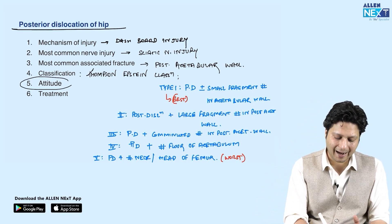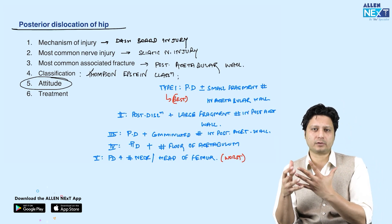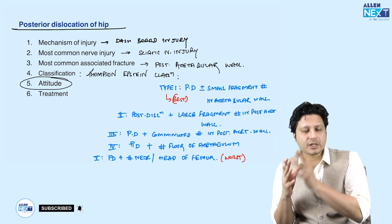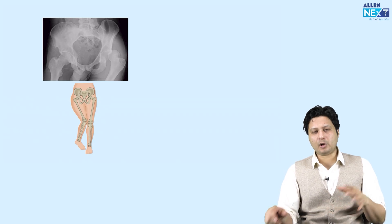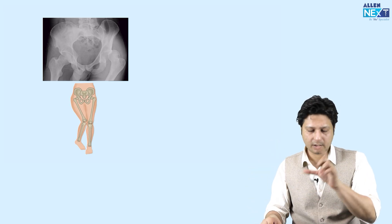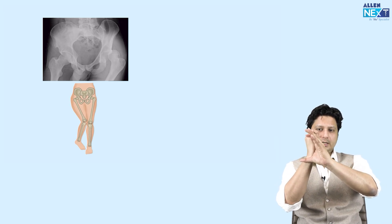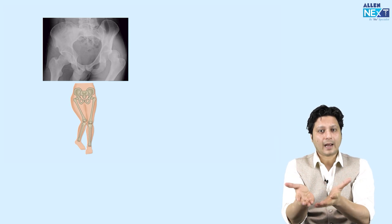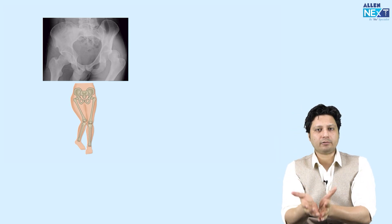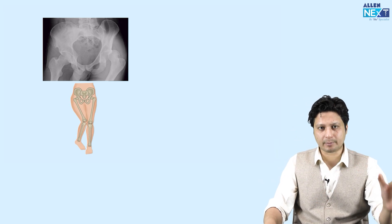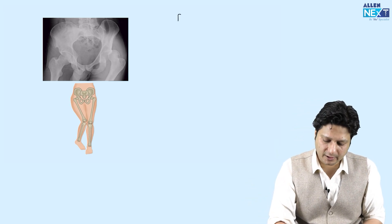Next is the attitude — the abnormal position in which the limb is kept when the patient comes to you in the emergency after getting posterior dislocation. When the head of the femur is thrusted posteriorly, this dislocation results in greater contraction of the anterior muscles, raising the hip joint into flexion. So one deformity is flexion of the thigh or hip joint.